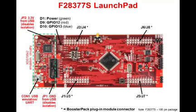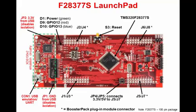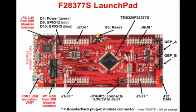User programmable LEDs D9 and D10 are connected to GPIO12 and GPIO13 respectively. The device is located in the center of the LaunchPad and push-button S3 is connected to the device reset line. Jumpers JP4 and JP5 connect 3.3 volts and 5 volts to the booster pack headers J5 and J7 respectively. Interfaces to the CAN and QEPs are located on the right side of the LaunchPad.